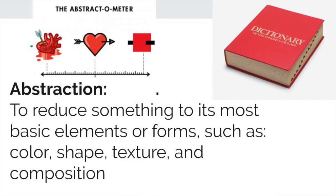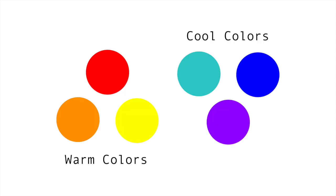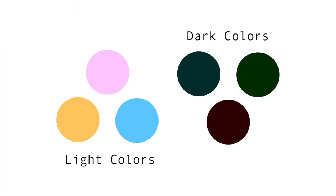We will now discuss color in terms of abstraction. There are warm colors and there are cool colors. Warm colors are typically associated with happy feelings, where cooler colors are typically associated with sad feelings. Similar to that, light colors are typically associated with happy feelings, and dark colors are typically associated with sad feelings as well.